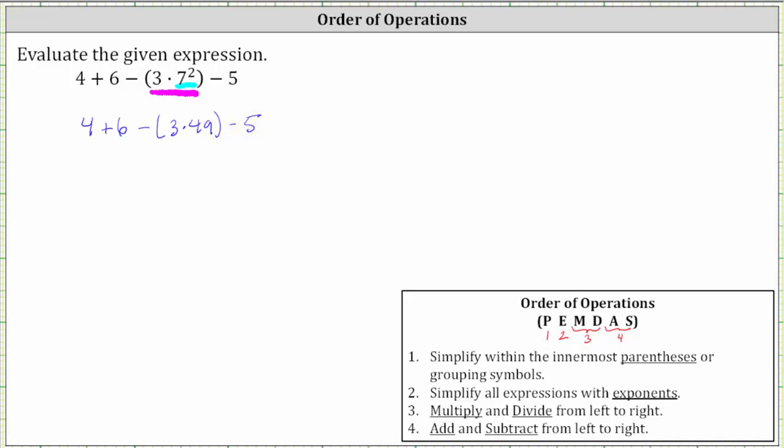Still simplifying inside the parentheses, the next step is to determine the product of three and 49. Three times 49 is equal to 147. The given expression simplifies to four plus six minus 147 minus five.